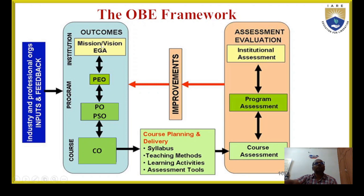First, the institute will have vision and mission statements. Then the department will have vision and mission statements. Then the department will have the program education outcomes. The NBA has given the program outcomes, and the department will create its own program-specific outcomes. For each course, we will decide some course outcomes and map these with the POs. Based on the course outcomes, we will design the planning and delivery of the teaching-learning process. After course completion, we will assess the outcomes — program outcomes and course outcomes. Then we will take feedback and improve upon these outcomes. This is the basic outline of the OBE framework.